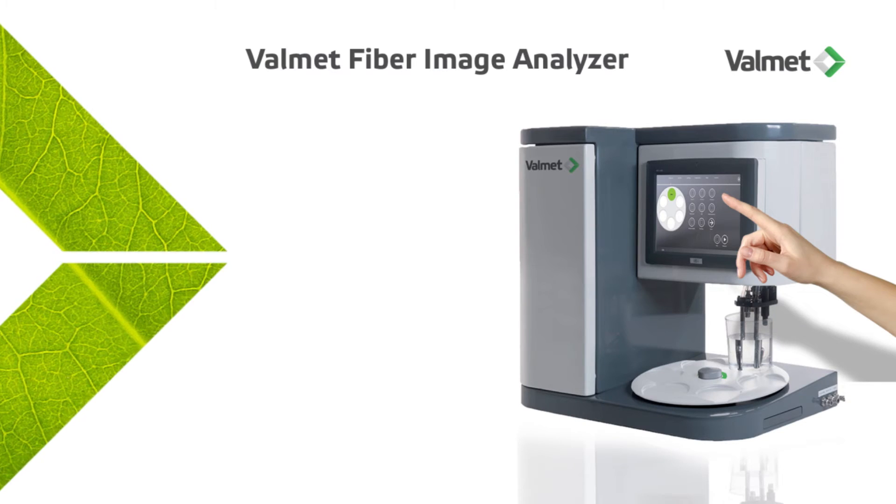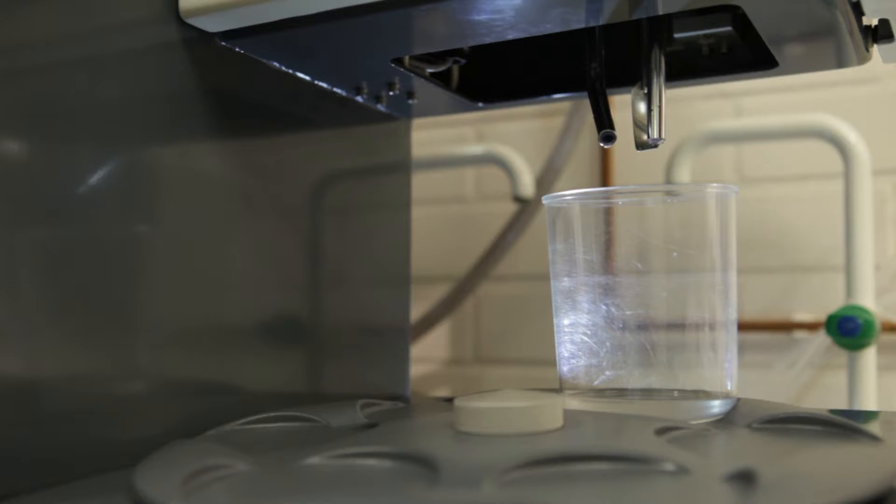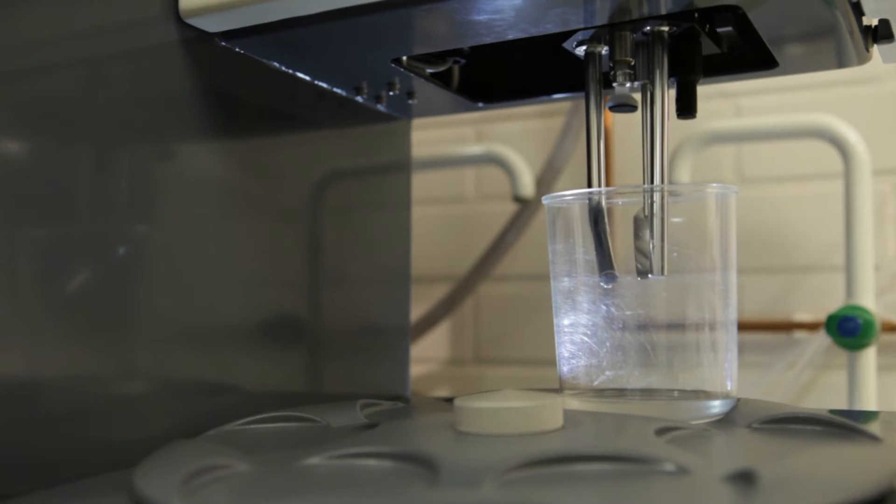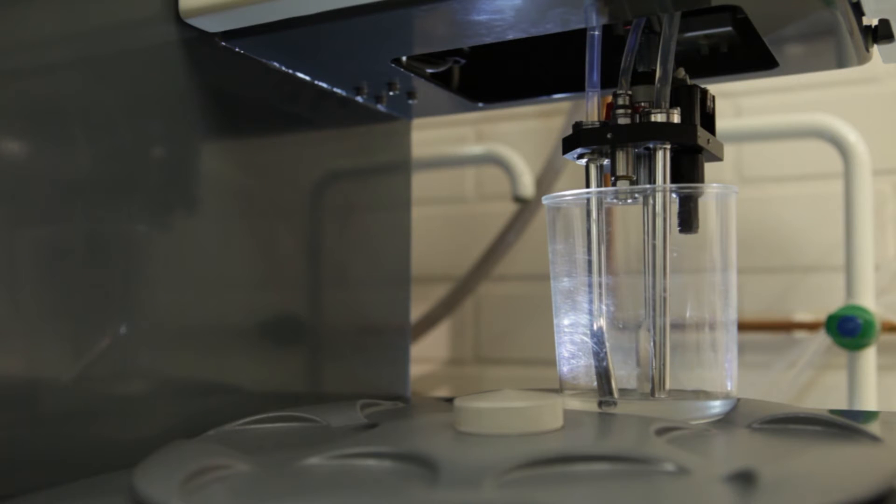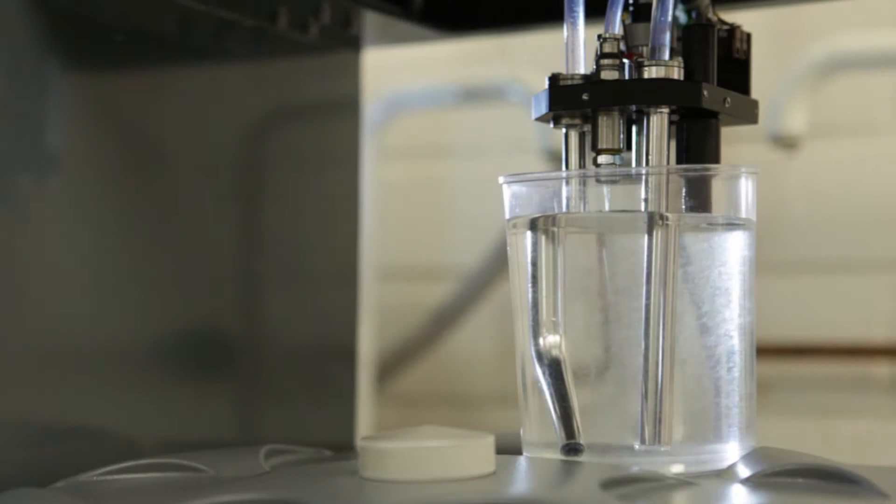The Valmet Fiber Image Analyzer, or the Valmet FS5 as we like to call it, is the fifth generation automated fiber analyzer from Valmet. It is packed with new technology and new features that bring fiber analysis to a whole new level.